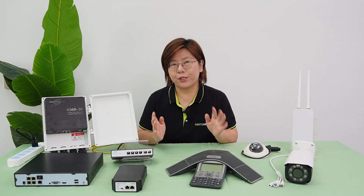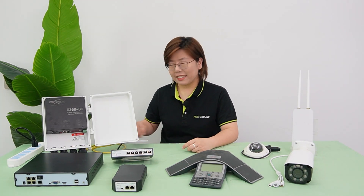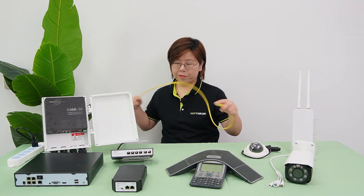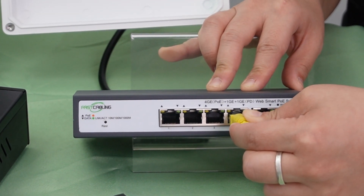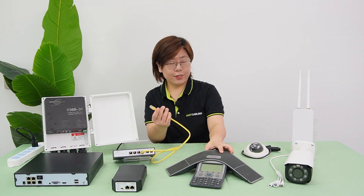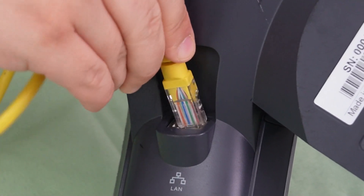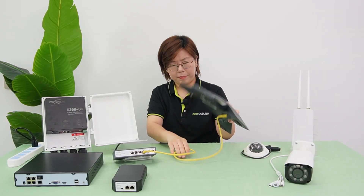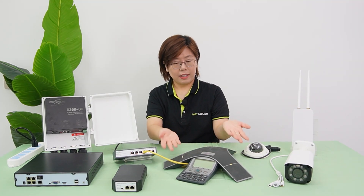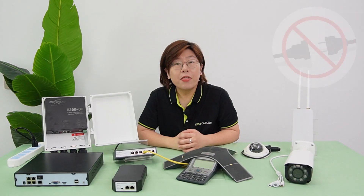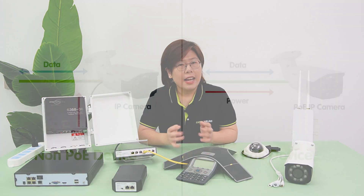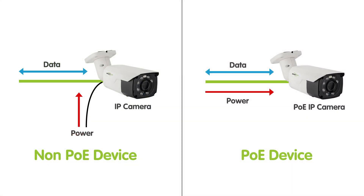The setup is super easy. Just plug the ethernet cable into your PoE switch and connect it to your PD. Boom! Both power and data in a single cable, no extra adapters. Non-PoE devices need two cables and an adapter, but PoE? Just one cable.